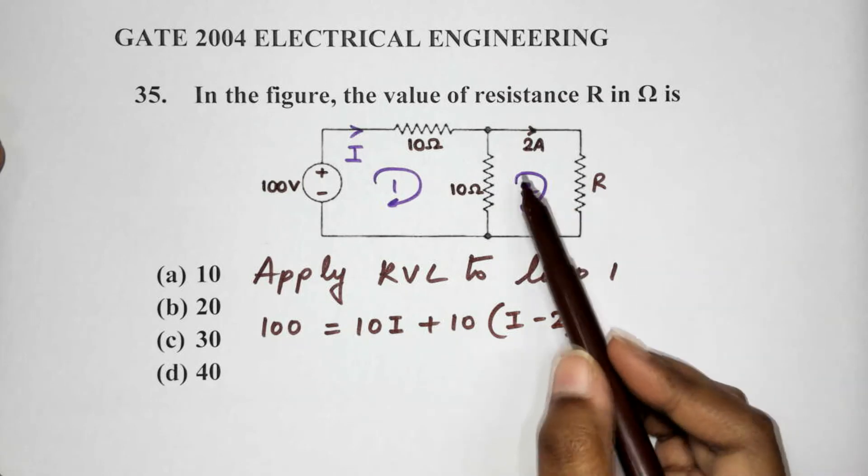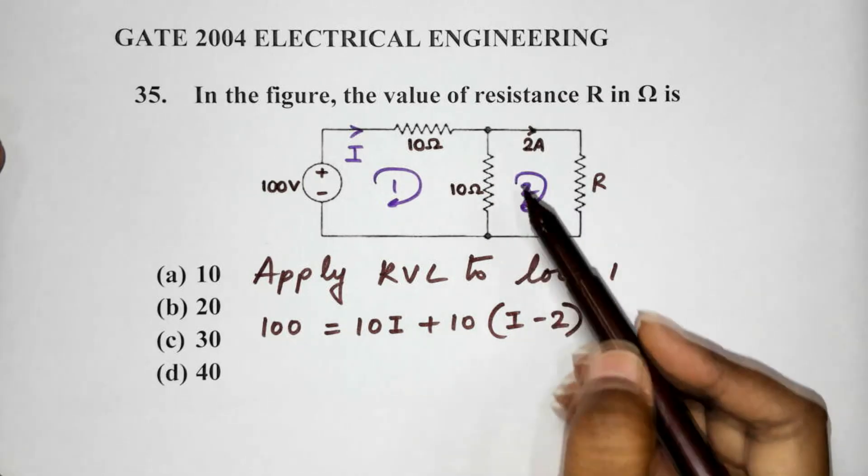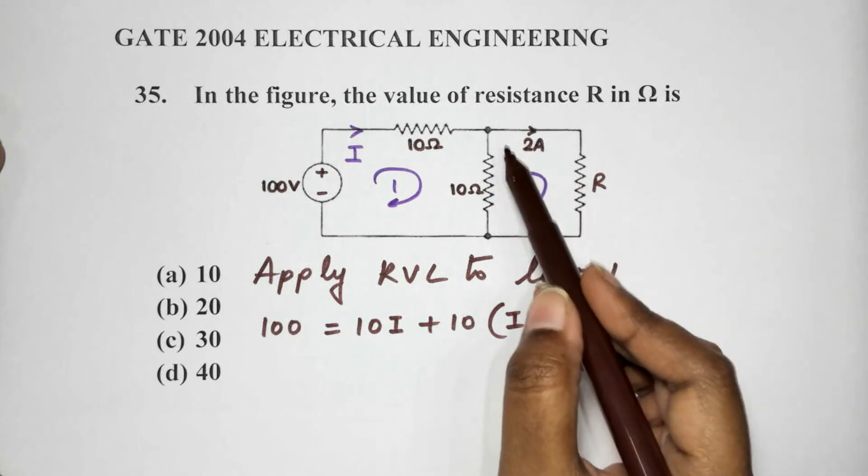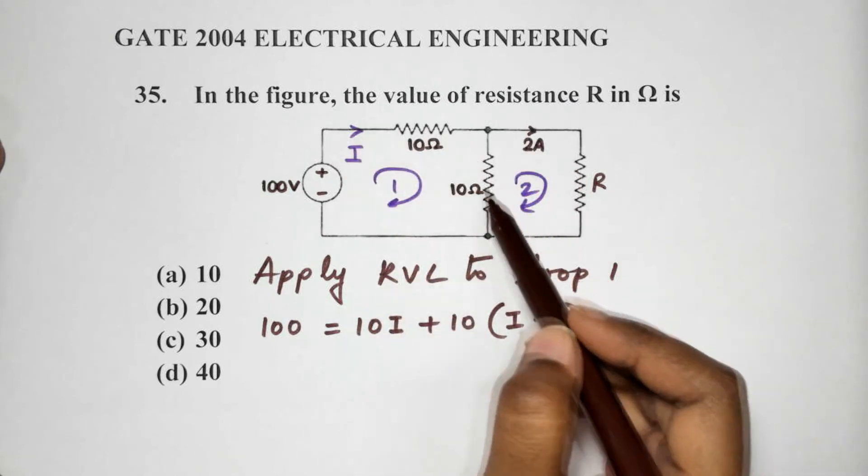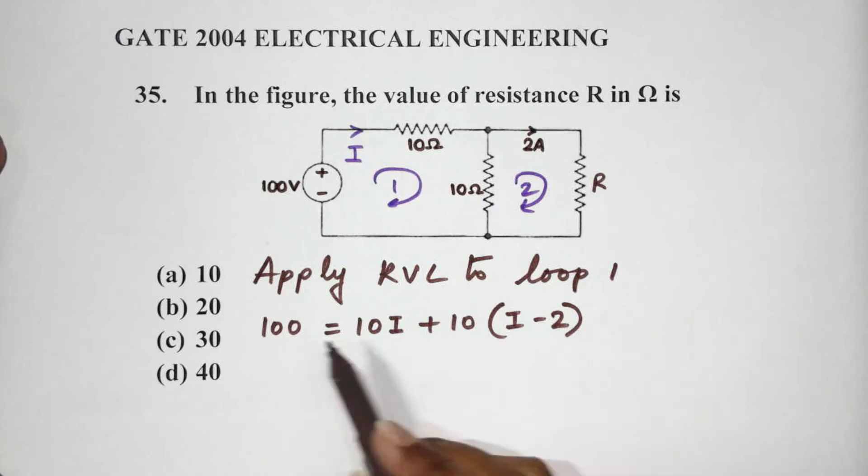That's because the current over here is 2 amps. The 2 amps is in one direction while the current I is in the opposite direction. So, it is I minus 2. So, this is our first equation.